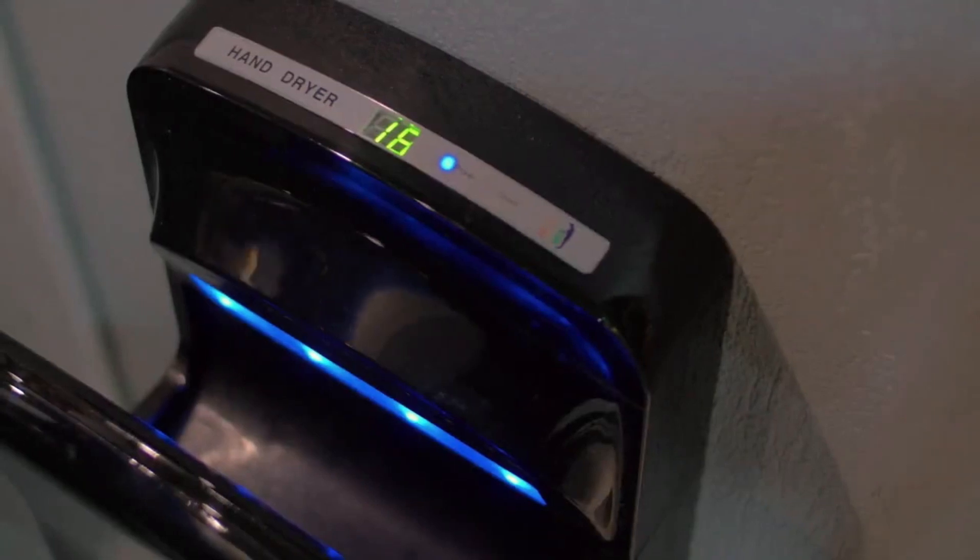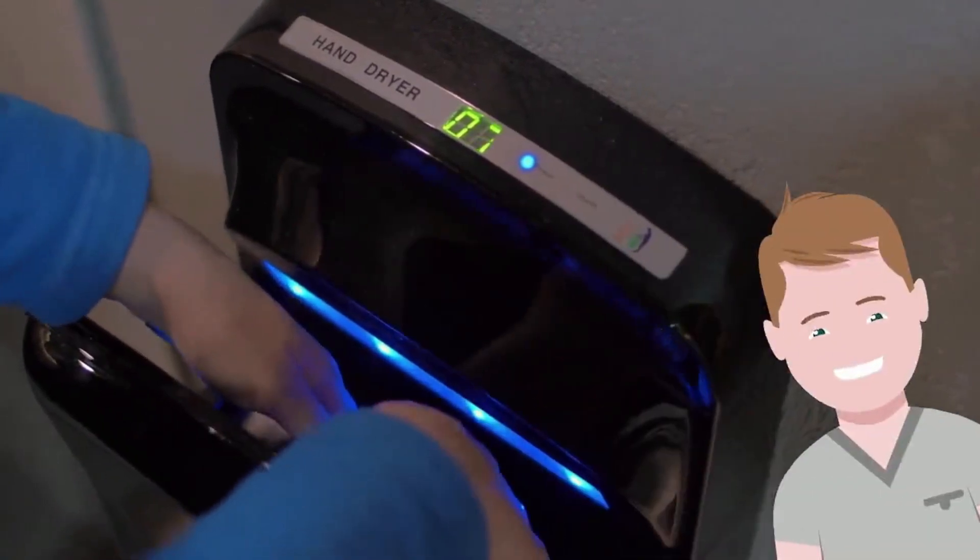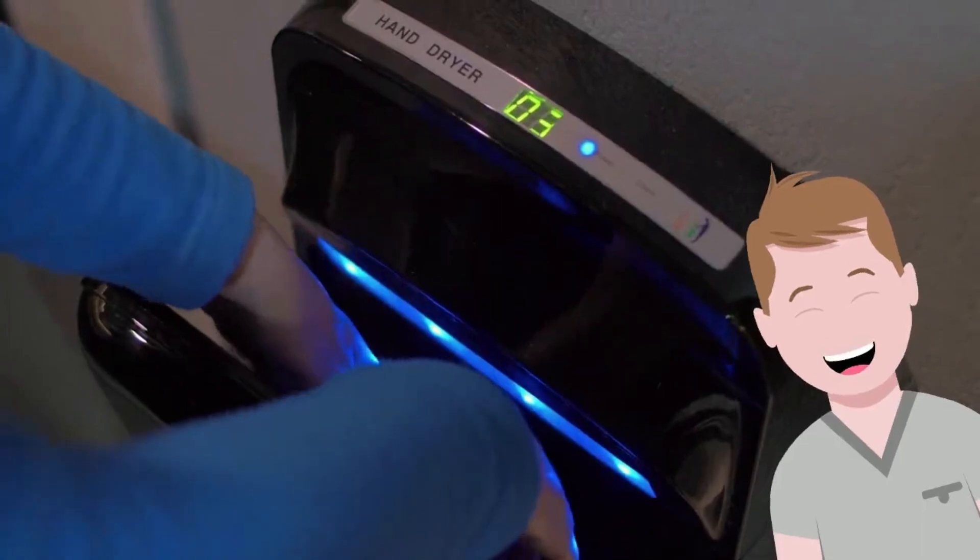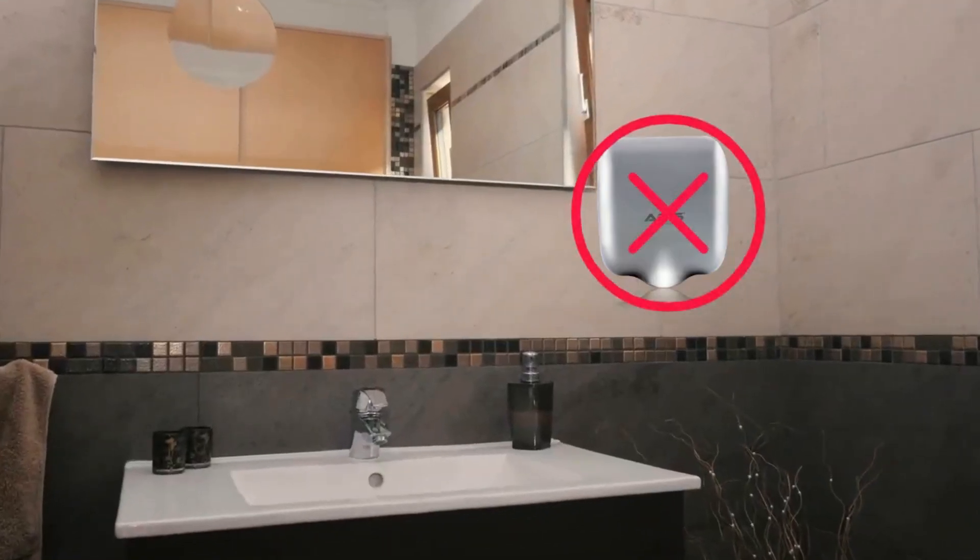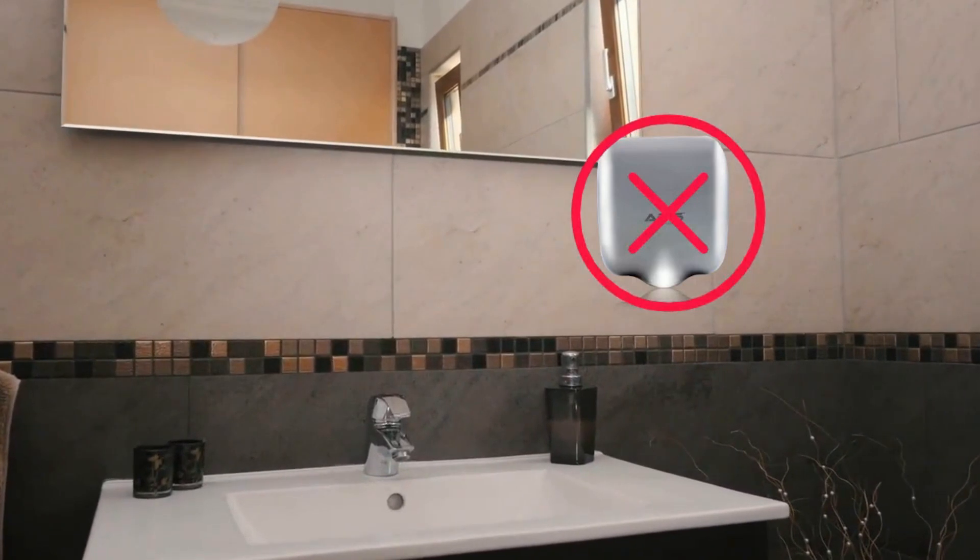If it is a JETS hand dryer, something like the Dyson Airblade, then install it at least a couple of feet above the ground for a suitable reach for all users. Make sure it is not too close to the toilet sink or entrance where it can cause interruptions.